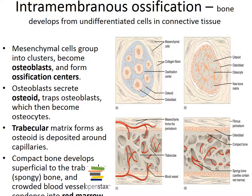The steps in intramembranous ossification are shown here. The first step is formation of a bone matrix within a fibrous membrane. Mesenchyme cells cluster and secrete organic components of the matrix. The location of this activity is called the ossification center. The resulting osteoid mineralizes and the mesenchyme cells differentiate into osteoblasts.